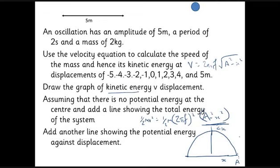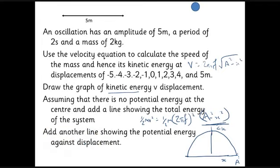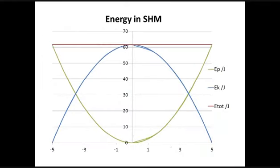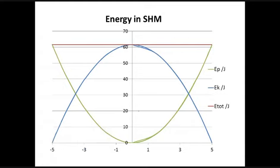Since total energy is constant, the potential energy graph is the mirror image: maximum at the ends and minimum at the center. Together, kinetic energy (blue, inverted parabola) and potential energy sum to a constant total energy (red horizontal line). This illustrates the continuous conversion between kinetic and potential energy throughout the oscillation.